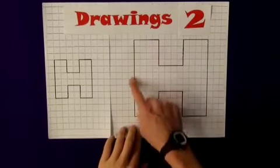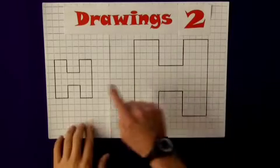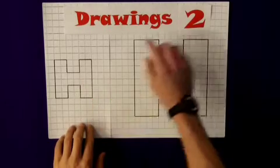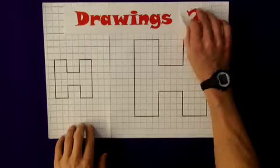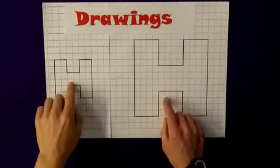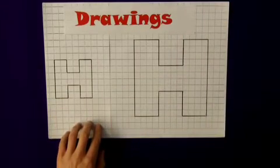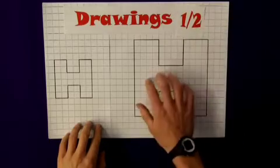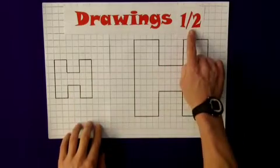What happens then if we consider this as our original shape and this is our scale drawing? Well in fact it would no longer be a scale factor of 2, but this shape has been reduced by half. So in fact the scale factor in this case, from this shape to this one, is one half.